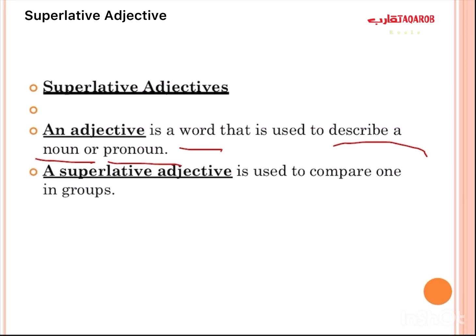For example, when I said 'Malak is very beautiful,' I describe Malak with the word 'beautiful,' which means jamila. So the word 'beautiful' is an adjective. When I said 'BMW is very expensive,' I describe this car with the word 'expensive,' which means ghalia. So the word 'expensive' is an adjective.